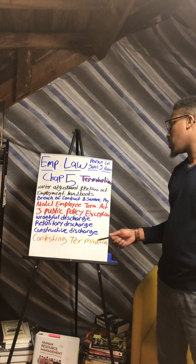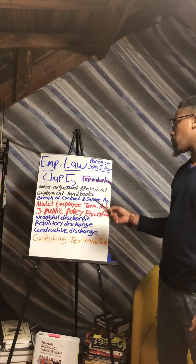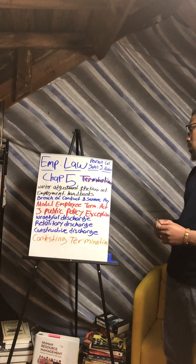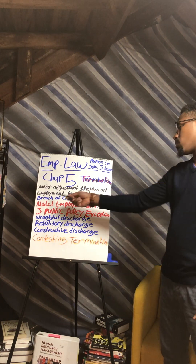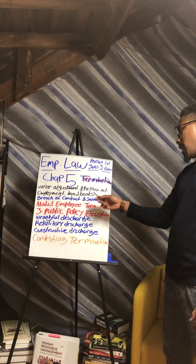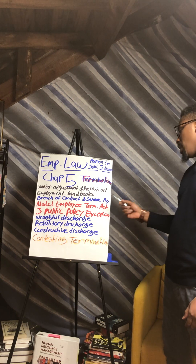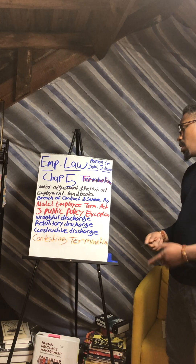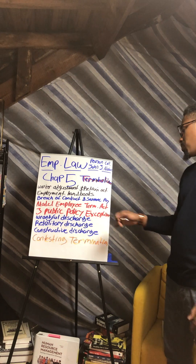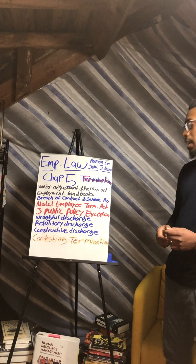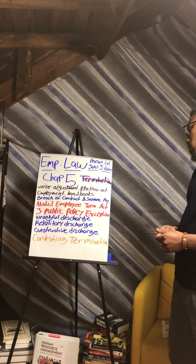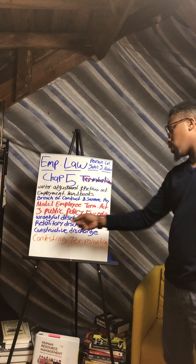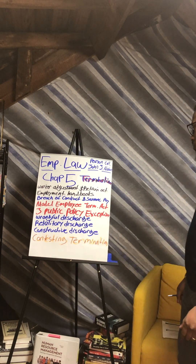The first topic is the Worker Adjustment and Retraining Act. Next, we'll cover employment handbooks and what they cover. Then we'll look into breach of contract and severance pay as two separate topics. After that, we'll move into the Model Employee Termination Act, the three public policy exceptions on why you can't be fired, and then wrongful discharge, retaliatory discharge, constructive discharge, and how to contest termination.